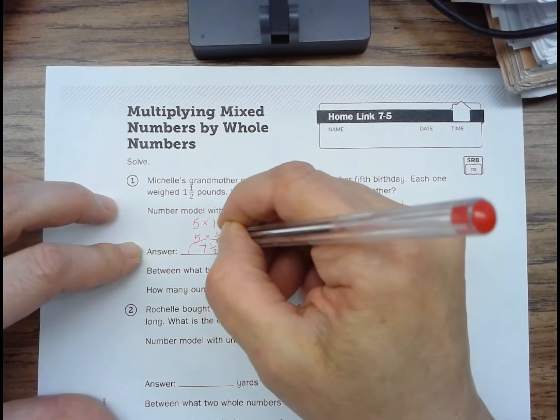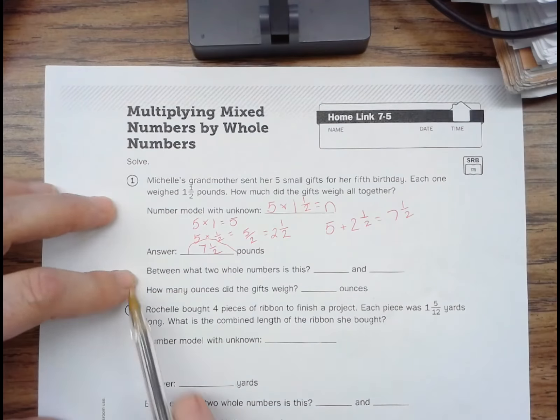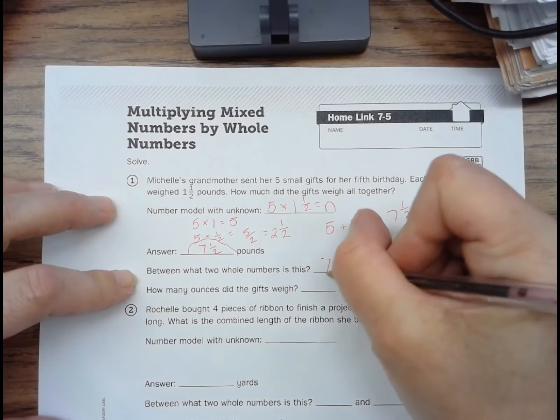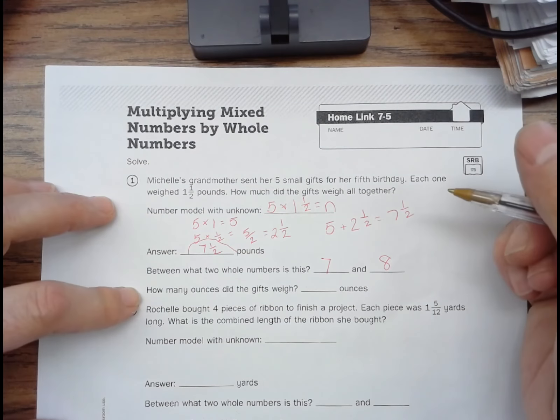Between what two whole numbers is this? Seven and eight. How many ounces did the gifts weigh?